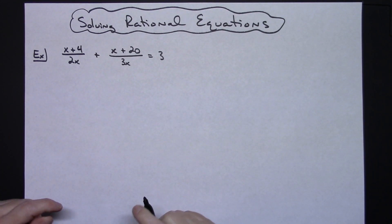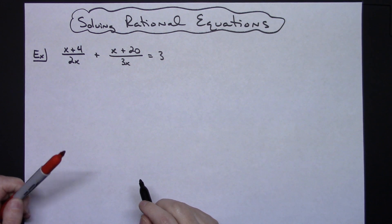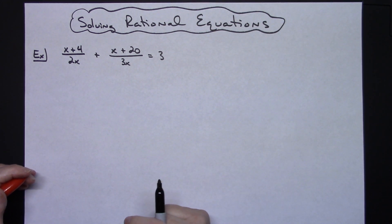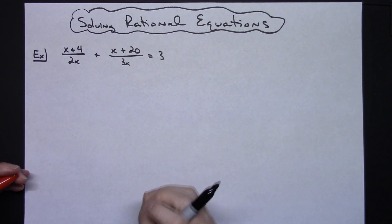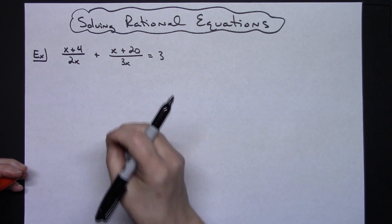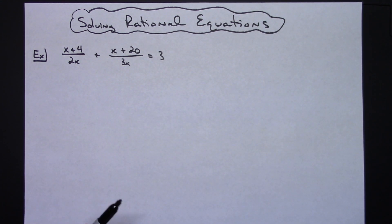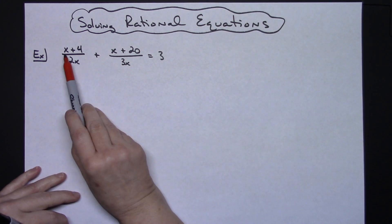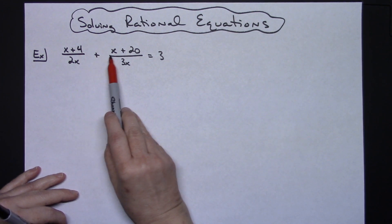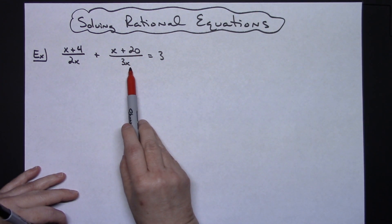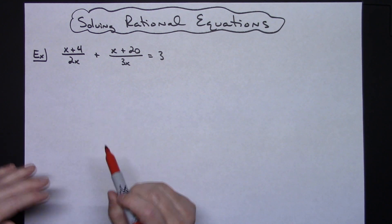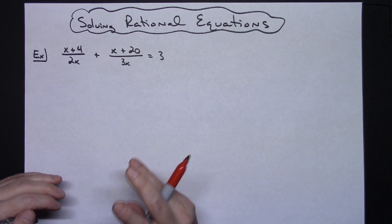In this video I'm going to work out two examples of solving rational equations. I'm only going to do two examples because they are kind of long, and when you get done you should put your answer back in and check, which takes a little bit of extra time as well. In this first example we're going to solve for x: x plus 4 over 2x plus x plus 20 over 3x is equal to 3.